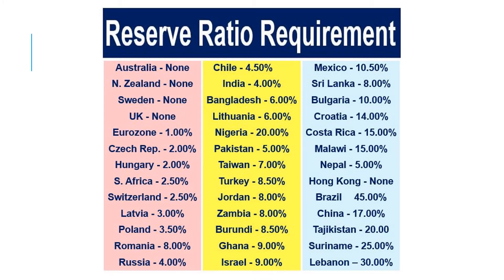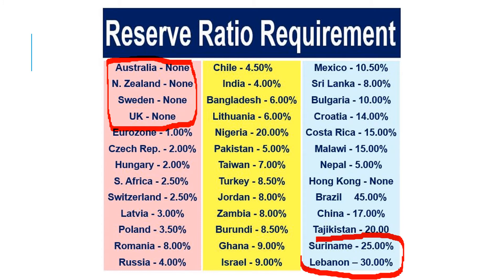Let's go back now to the reserve ratio — the proportion of depositors' money that banks must keep and not lend out. We can see there's quite a range of values: in some countries there's no real reserve requirement, all the way up to some countries where over a quarter of all the money banks receive they can't lend out and have to keep within the bank. But the broad range here is somewhere between zero and about 20%.